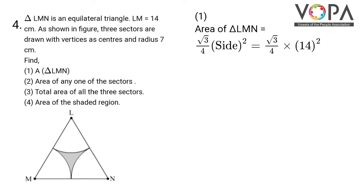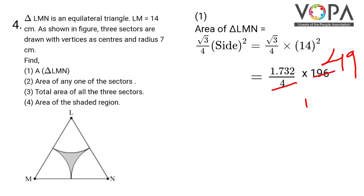Area of triangle LMN equals √3/4 into side squared — this is the formula for area of an equilateral triangle. So, √3/4 into 14 squared. The value of root 3 is 1.732, divided by 4, into 14 squared which is 196. 196 cancels with 4 to give 49. Hence, 1.732 into 49 gives 84.87 square cm.